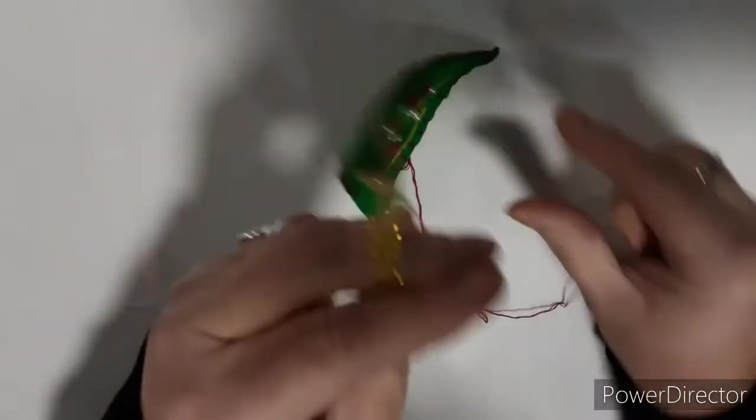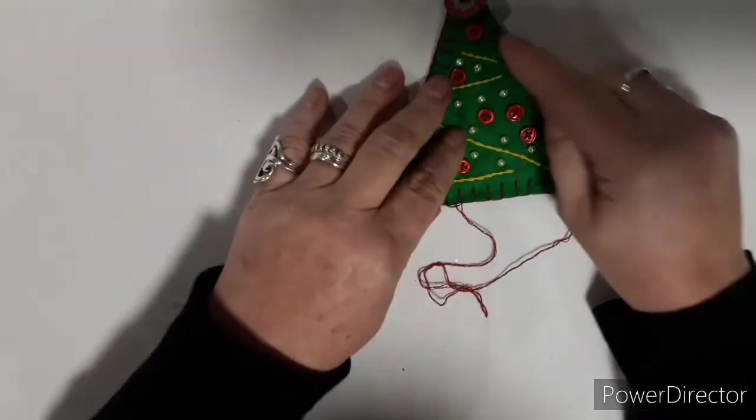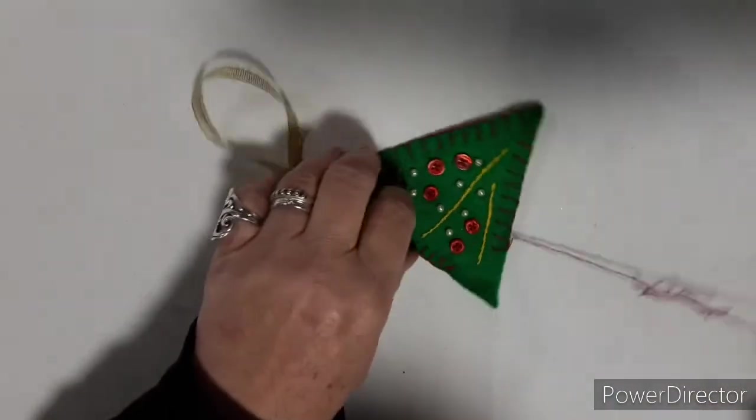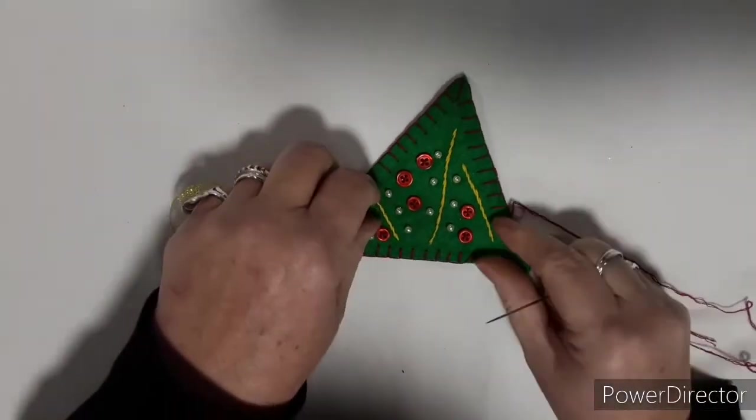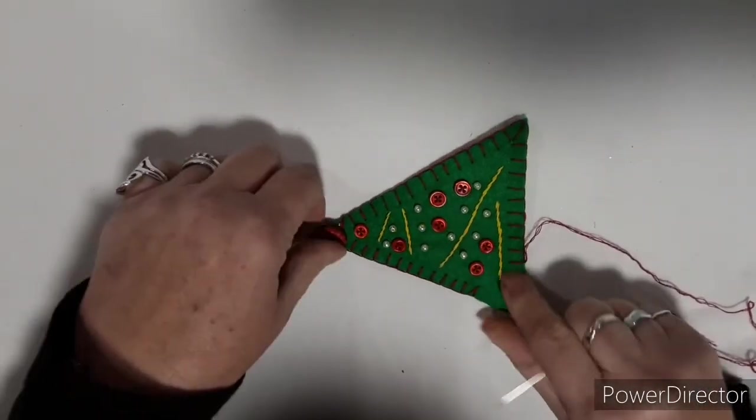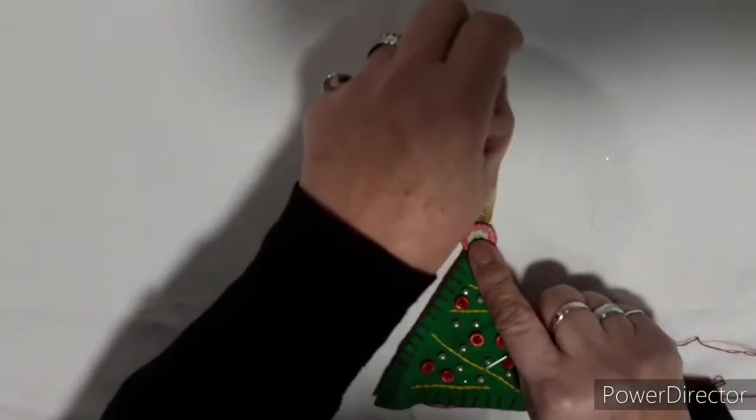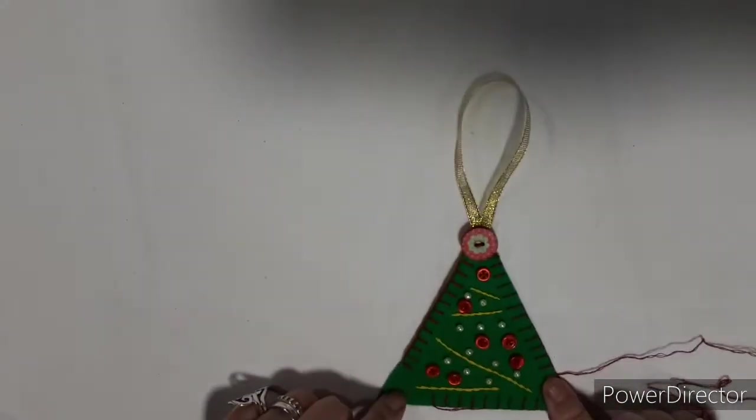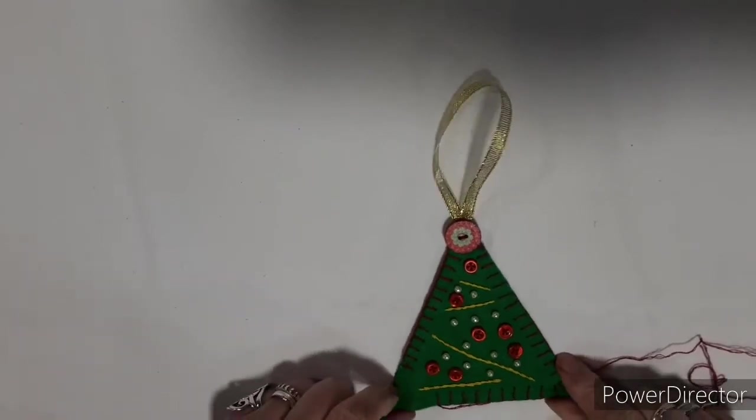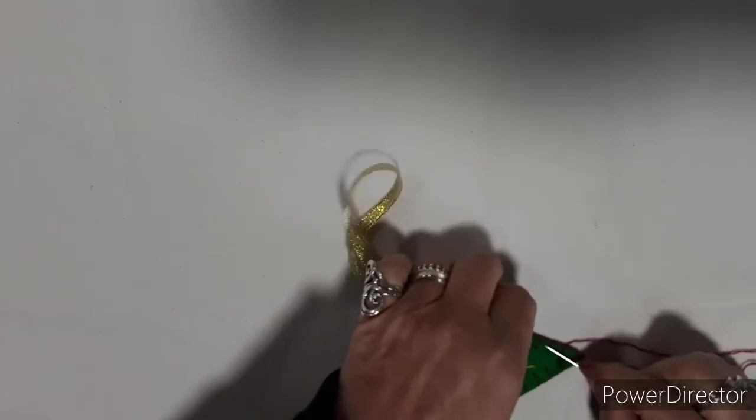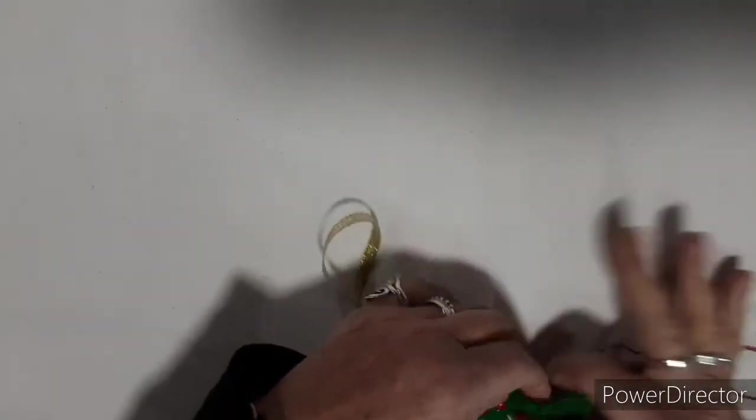Once you've gone around all around the edges, you actually need to leave a little gap because we need somewhere to add some stuffing. You don't have to, you can just stitch it up. I've added a button at the top there and a ribbon loop to hang it with.